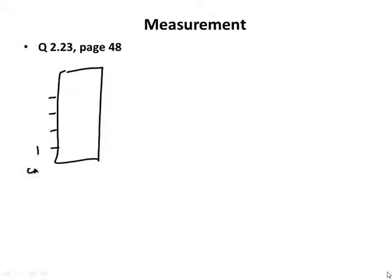For example, the markings go: one, two, three, four. If you have a paperclip, as the picture shows, the paperclip is somewhere right around there — it goes to that level. So if you're using a ruler calibrated only every one centimeter, how do you record the length of this paperclip?